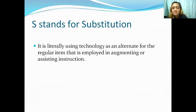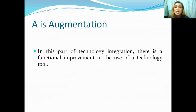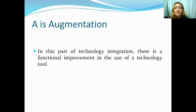Next is augmentation — this is the part of technology integration where there is a functional improvement in the use of a technology tool. With Google Maps, you can use features such as measuring the distance from one point to another. You can provide a task by making students utilize this — for example, asking students to measure the distance and estimate travel time from one point to another. With this use of Google Maps, the application provides the distance automatically, and instruction with technology integrated is enhanced.